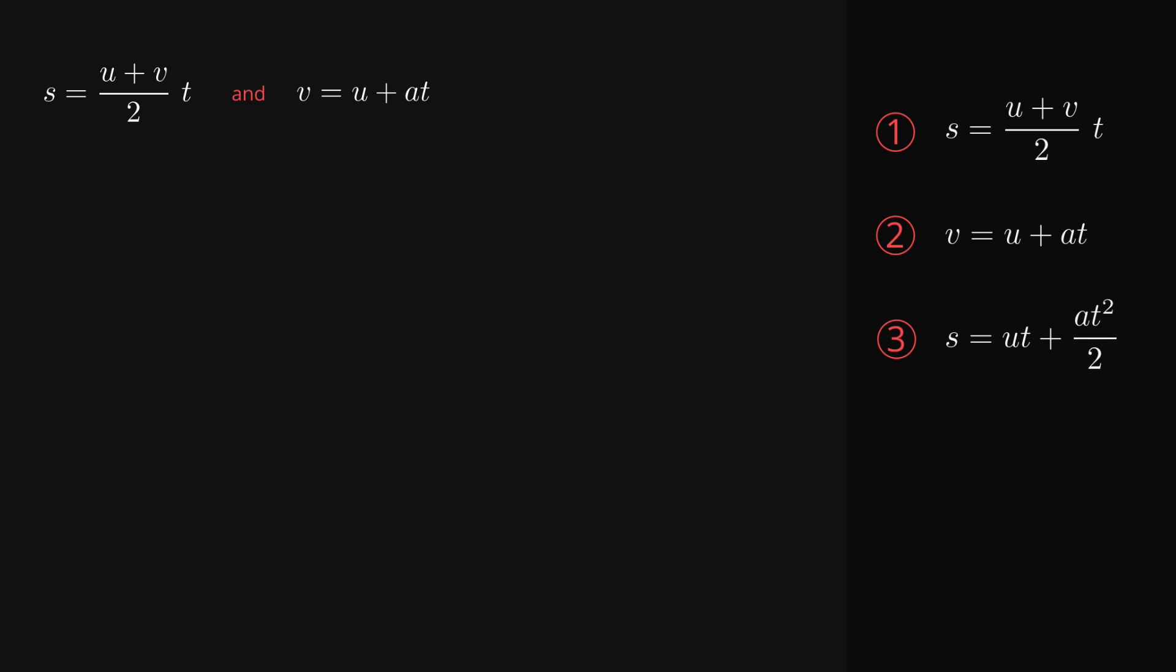Let's now rearrange the second equation to solve for initial velocity. We substitute that into the first, and simplify in the same way as the previous one, this time to get displacement equals final velocity times time minus acceleration times time squared over 2. This is the fourth equation.